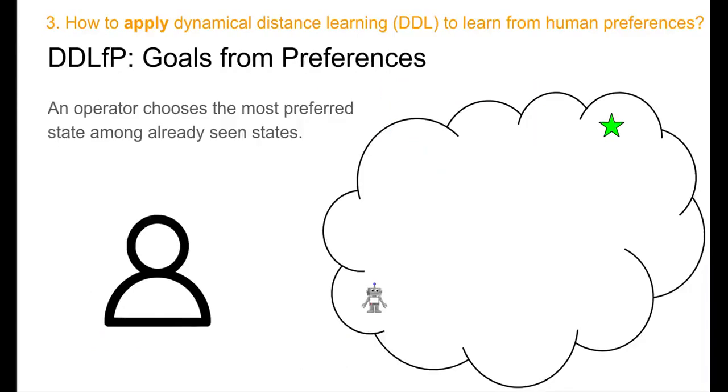Now that we know how to train policies with dynamical distances, let's discuss an application of this idea for learning from human preferences. In this setting, a human operator selects goals for our agent from a filtered set of previously explored states.